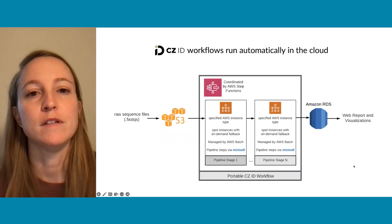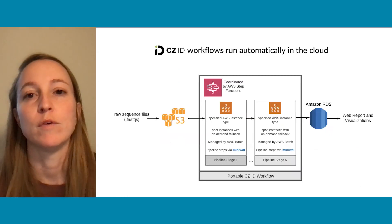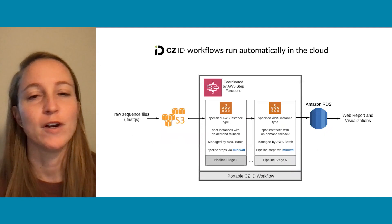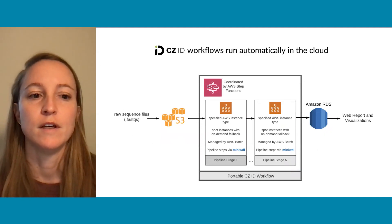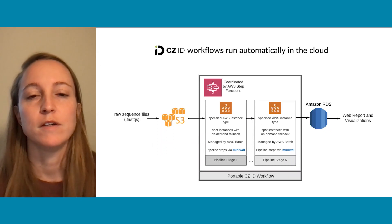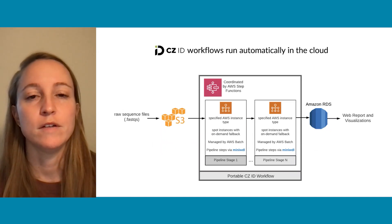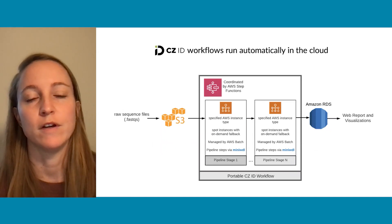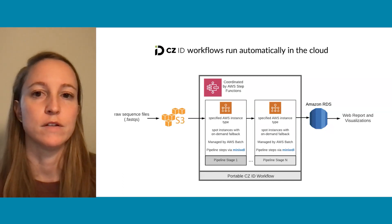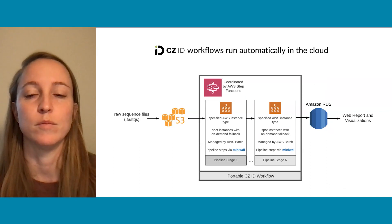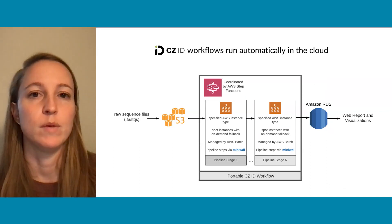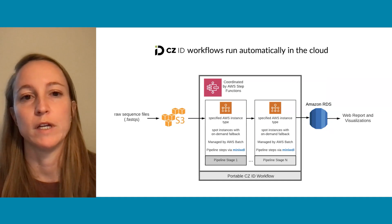The CZID workflows run automatically in the cloud. Raw sequence files or FASTQs are uploaded to S3, where they're stored securely, and then AWS step functions are used to coordinate the pipeline processes. The results of those pipelines are then put into a database for web reporting and visualization.